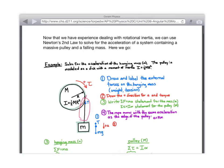So we're going to solve for the acceleration of the hanging mass. Now, is the hanging mass going to accelerate at 9.8 meters per second squared? No.